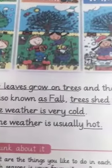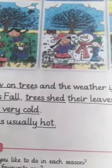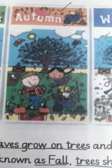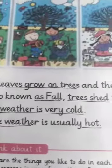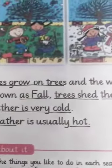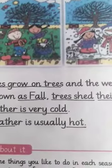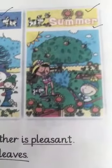In autumn, also known as fall, trees shed their leaves — you can see in the picture. In winter, the weather is very cold — you can see in the picture.